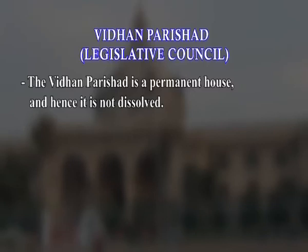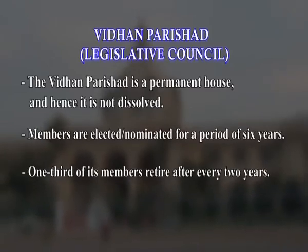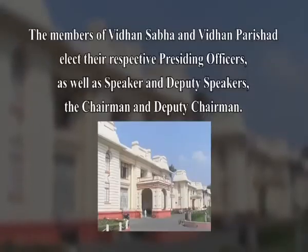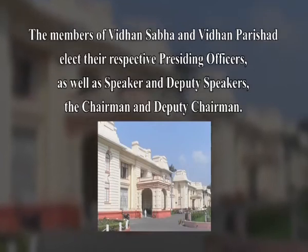The remaining one-sixth members are nominated by the governor of the state. The Vidhan Parishad is a permanent house and hence is not dissolved. Members are elected or nominated for a period of 6 years, and one-third of its members retire every 2 years. The retiring members are eligible for re-election. The qualifications for becoming members of the legislative council are similar to those for the legislative assembly; however, the minimum age for the legislative assembly is 25 years whereas for the council it is 30 years. The state legislature meets at least twice a year and the interval between two sessions cannot be more than 6 months. The members of Vidhan Sabha and Vidhan Parishad elect their presiding officers: the speaker and deputy speaker for the assembly, and the chairman and deputy chairman for the council. The business of the two houses is conducted by their respective presiding officers, who also maintain discipline and order in the house.